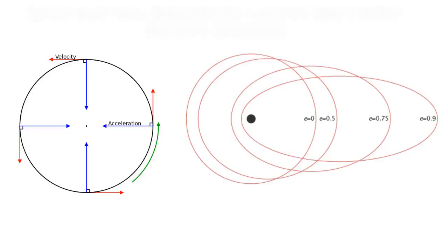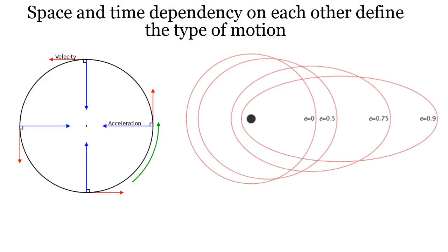A scalar version of the above is distance, defined as a path traversed by an object. The rate of change of distance with time is called speed.